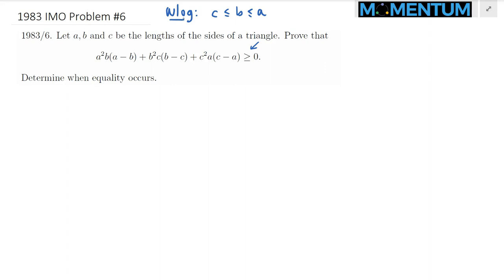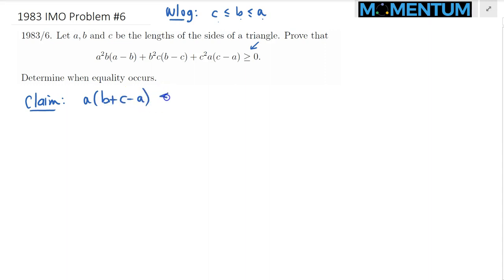So with this assumption, we had an earlier claim — I think in the 1964 IMO question we had a similar claim. Let me restate this claim and prove it one more time quickly. I claim that if A is the largest of the three sides followed by B and C, then A(B+C−A) ≤ B(A+C−B) ≤ C(A+B−C).